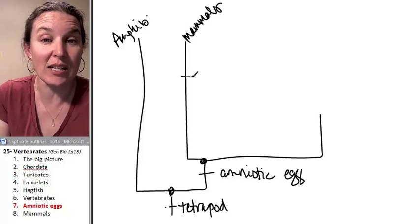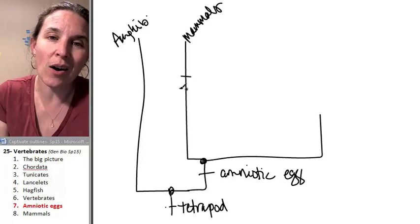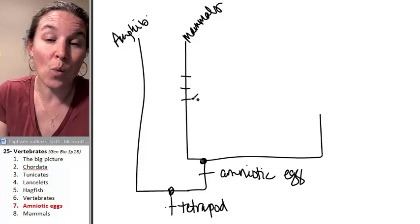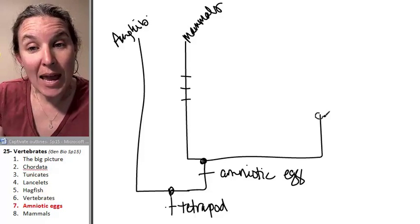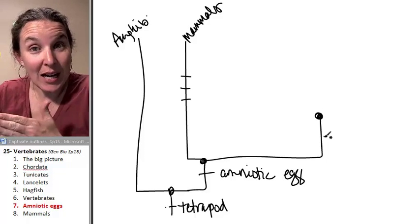The ancestor that had the amniotic egg was more similar to reptiles than mammals, and then we got various characteristics, like hair, mammaries, warm-bloodedness.